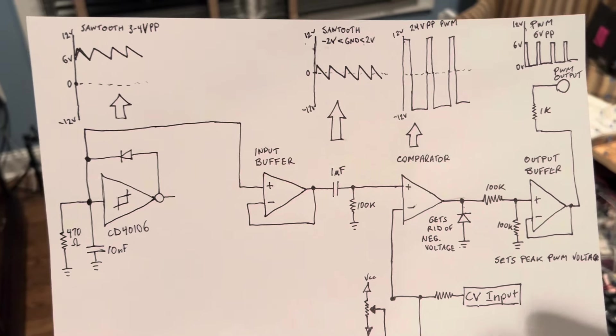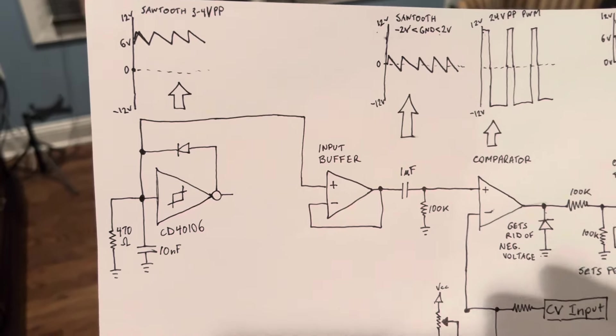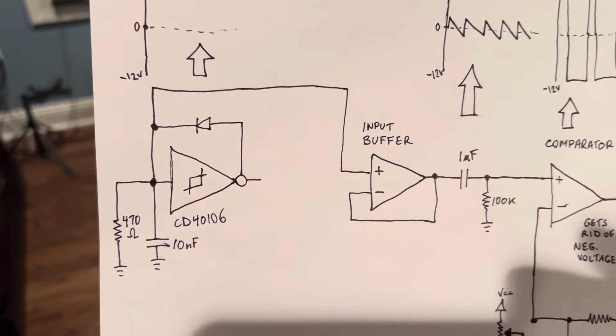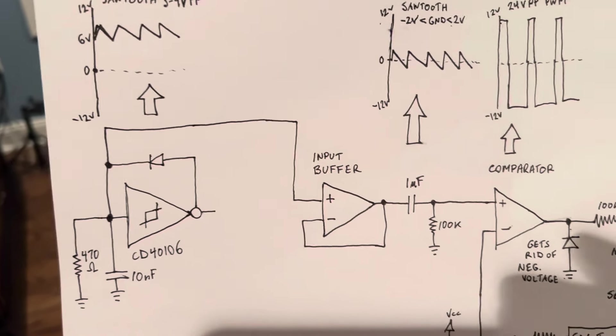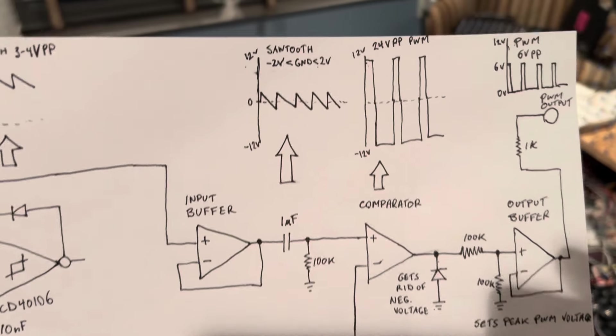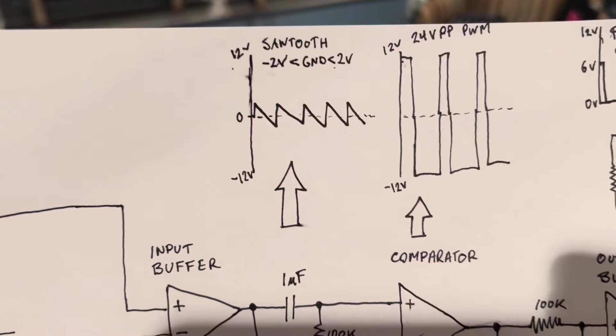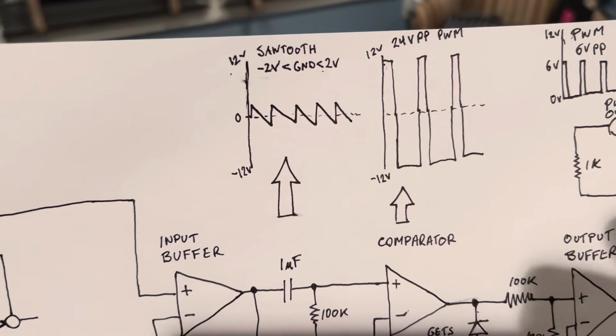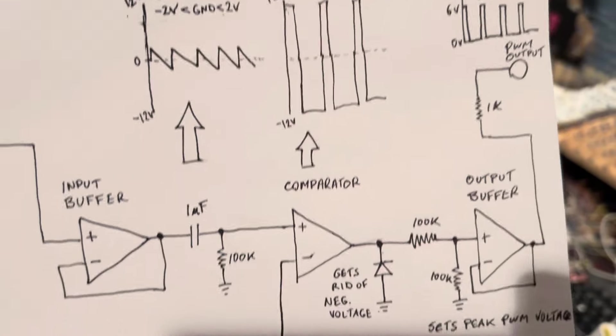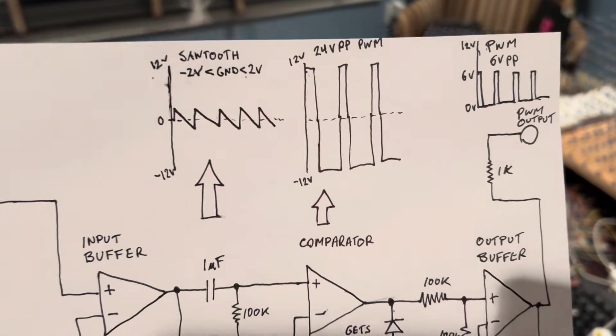Last week I built this PWM generator, which is basically a CD4106 oscillator making a sawtooth wave. That's buffered, then it centers the sawtooth wave around the ground, and then it uses a comparator to make a pulse wave.